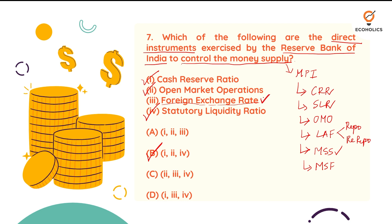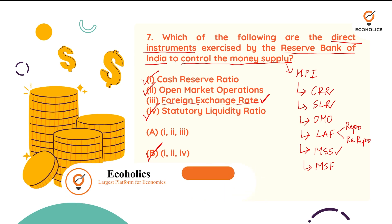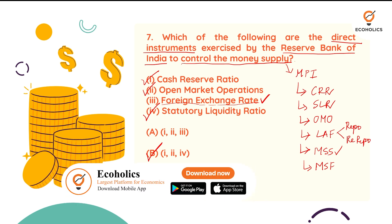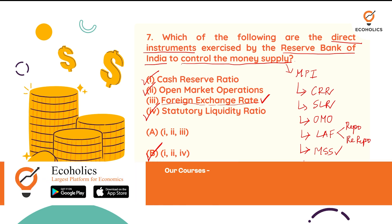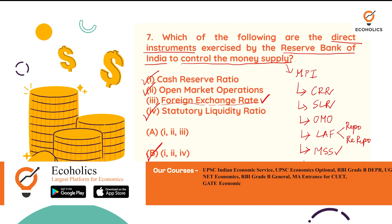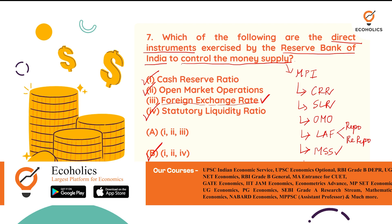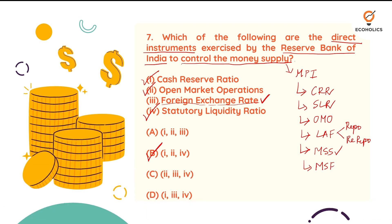You should also know whether foreign exchange rate is relevant here. Foreign exchange rate is not directly relevant to controlling the money supply, because it refers to the exchange rate between a domestic currency and a foreign currency — it has nothing to do with controlling the money supply directly. The Reserve Bank of India will not be using foreign exchange rate as a direct instrument because it is not a monetary instrument in the first place.